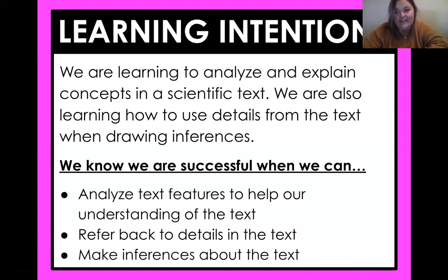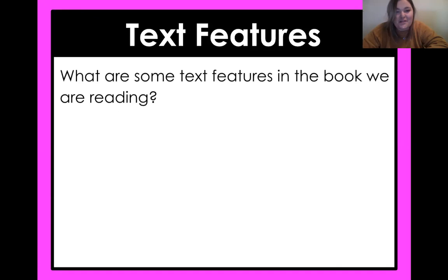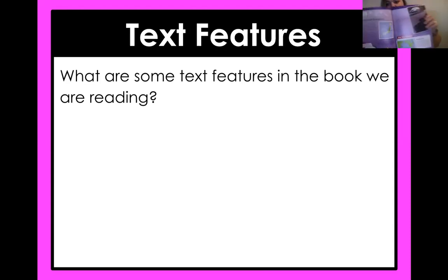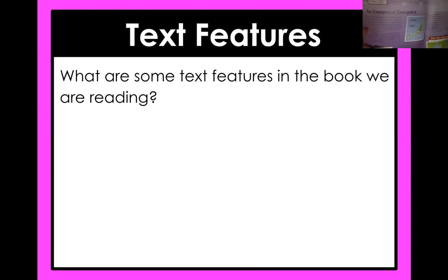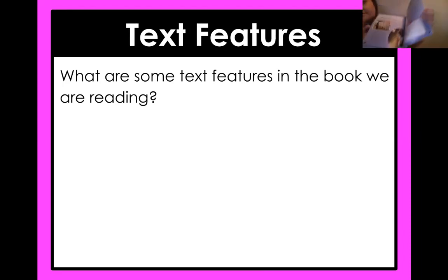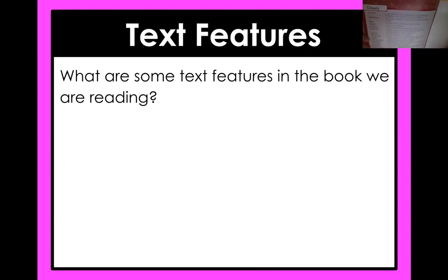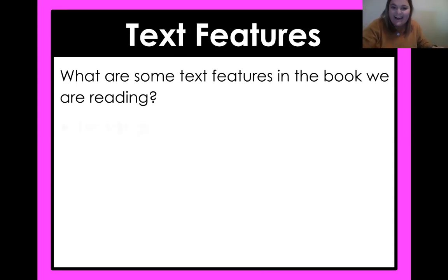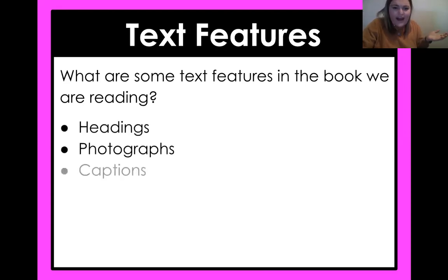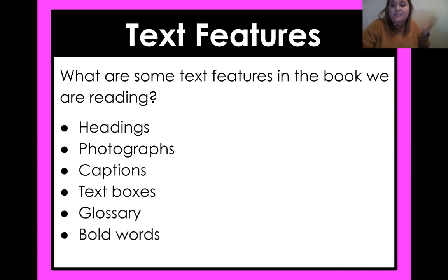We know we are successful today when we can analyze text features to help our understanding of the text, refer back to details in the text, and make those inferences about the text. So, do you guys remember what some of the text features are in the book we're reading — 'Tsunami Unfolds'? I heard headings, photographs, captions, text boxes, the glossary in the back of the book, and some bold words.